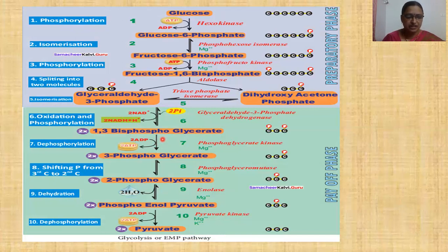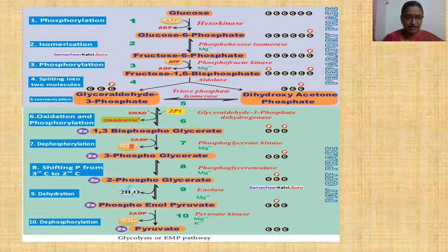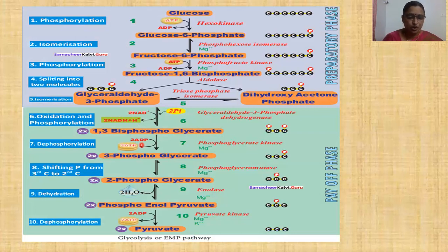Phosphoenolpyruvic acid + ADP + H2O, in the presence of pyruvate kinase, gives pyruvic acid + ATP. One glucose molecule is converted into two molecules of pyruvic acid at the end of glycolysis, as each reaction in the oxidative and payoff phase from step 6 to step 10 occurs twice. Two ATP molecules are generated at step 7, and two more ATP molecules at step 10, producing four ATP molecules in all, and two molecules of NADH2 are produced at step 6. The overall glycolysis reaction: Glucose + 2 NAD+ + 2 ATP + 2 inorganic phosphate → 2 pyruvic acid + 2 NADH2 + 2 ATP (net).